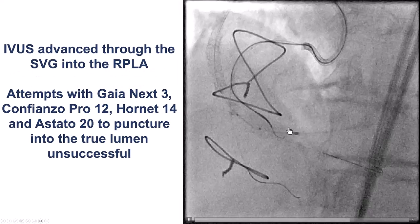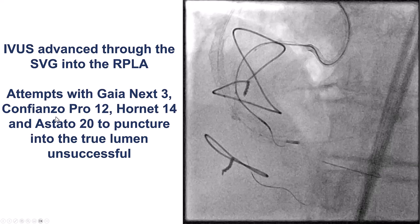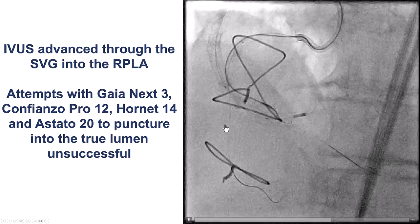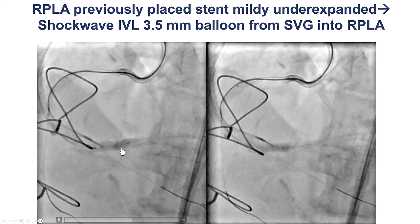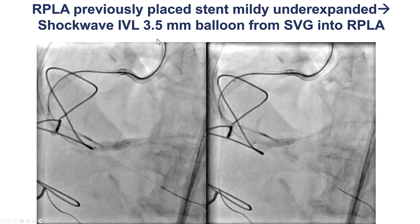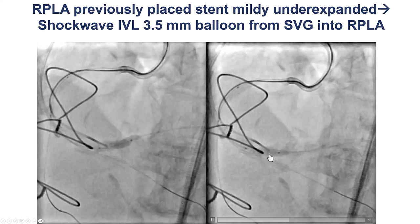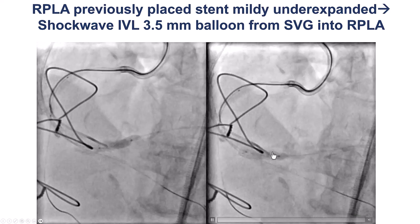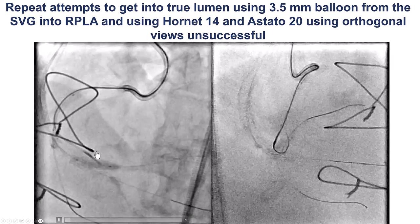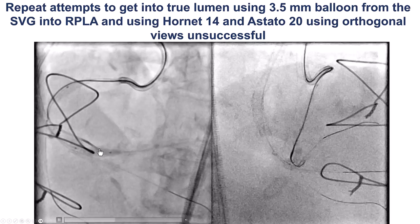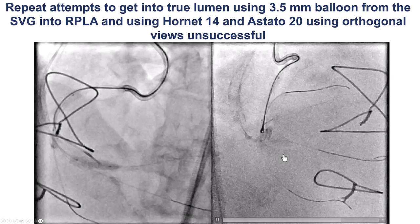We did an IVUS into the main vessel, and then did multiple attempts to puncture through the previously placed stents using a Pro-12, a Hornet-14, and a Staton-20, but these were not successful. There was under-expansion in the previous stents, so we placed a 3.5-millimeter shockwave intravascular lithotripsy balloon and gave 80 pulses in that vessel, then tried again to enter. We used the balloon to expand the stent as much as possible, and we used a Hornet-14 and a Staton, but we still could not puncture.